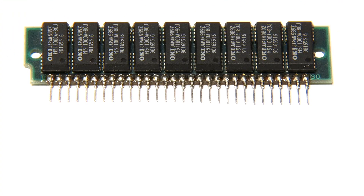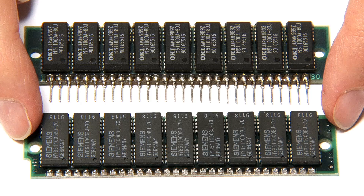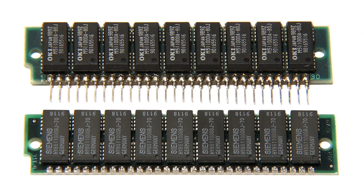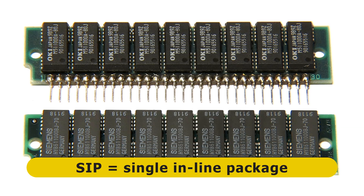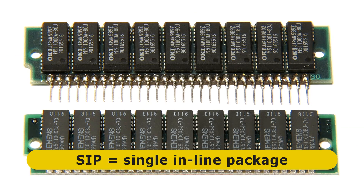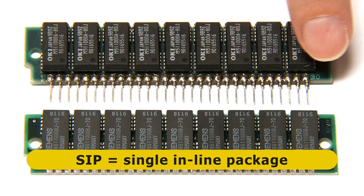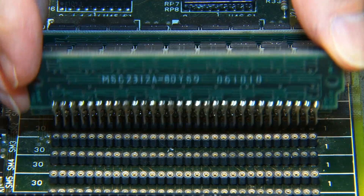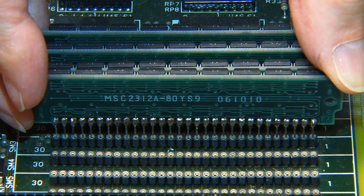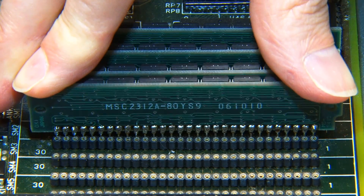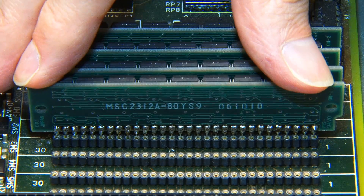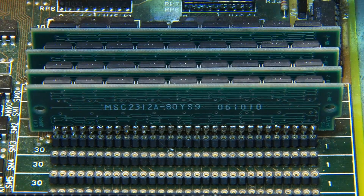To overcome these limitations, RAM chips started to be soldered into packages or modules that were in turn plugged into a computer's motherboard. Two standards initially emerged, known as SIPs and SIMs. As you can see, a SIP, or single-in-line package, had 30 pins that plugged into a row of tiny round sockets. While great in theory, SIPs could be tricky to fit, were expensive to produce, and it was easy to bend or otherwise damage their pins.